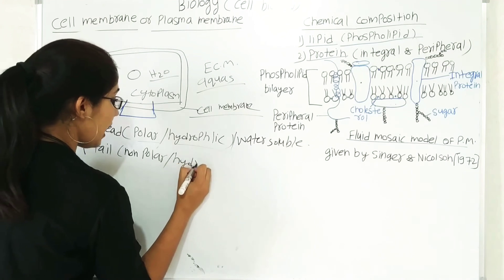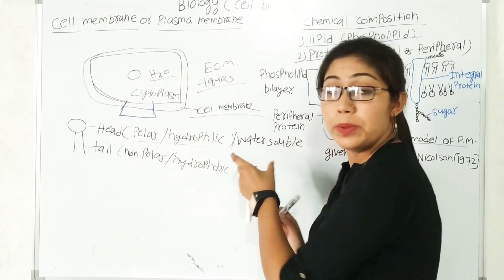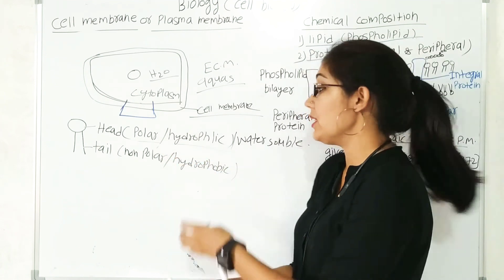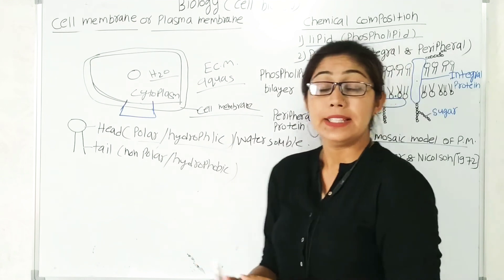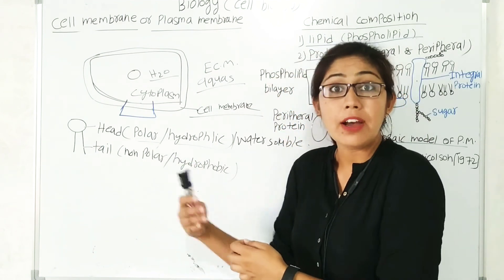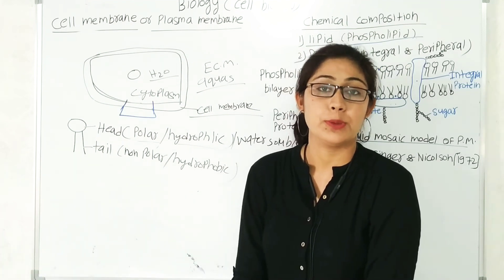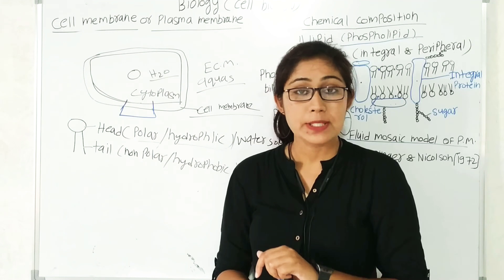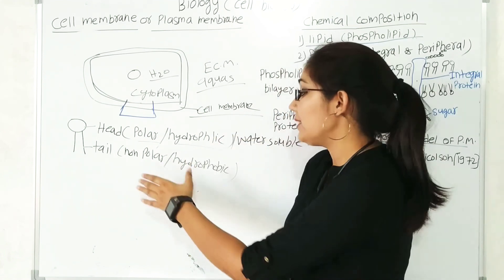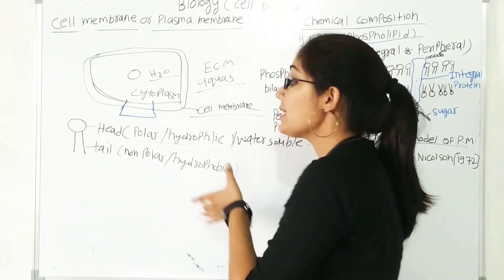The tail part is a hydrophobic component. Hydrophilic means water-loving or water-attractant — it is water soluble. The tail part is a non-polar, hydrophobic molecule. Hydro means water, phobia means fear — so this tail part is hydrophobic, meaning it is a water-repellent group of the phospholipid. Overall, a phospholipid molecule is made up of two components: the head part, which is hydrophilic and water attractant, and the tail part, which is non-polar and hydrophobic.